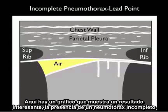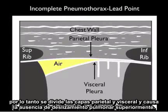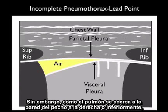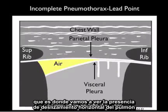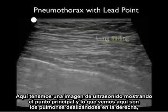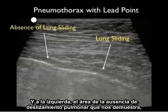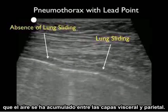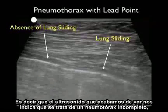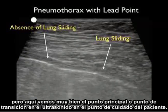Here's a pictorial showing the signature of an incomplete pneumothorax known as the lead point. We see an incomplete pneumothorax with air collecting to the superior aspect, splitting the parietal from the visceral layers and causing an absence of lung sliding superiorly. However, where the lung comes up against the chest wall inferiorly, that's where we'll see horizontal lung sliding and the presence of vertical comet tails. Here's an ultrasound image showing the lead point — lung sliding to the right where the lung touches the chest wall, and to the left, the area of absence of lung sliding where air has collected between the visceral and parietal layers. This lead point or transition point is very well seen on bedside sonography.